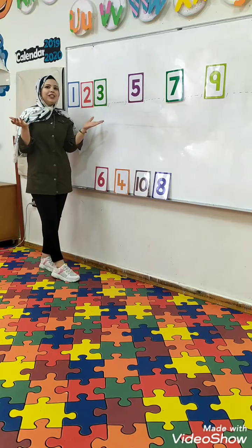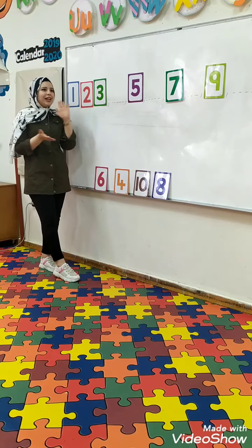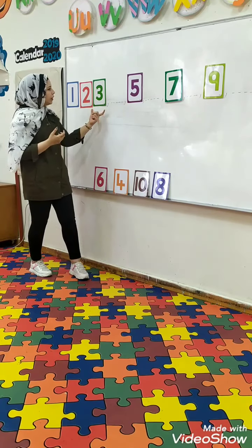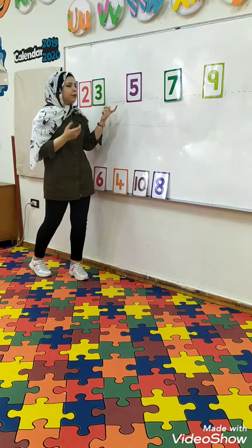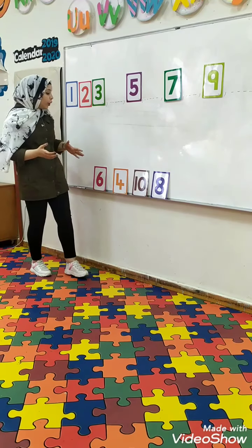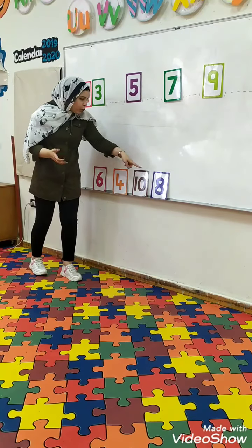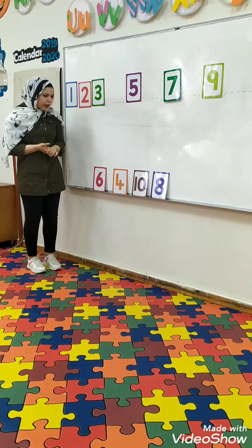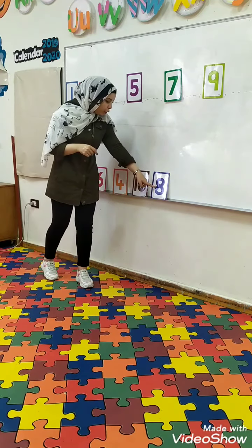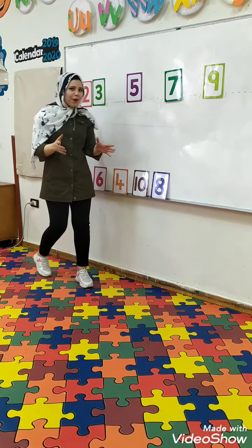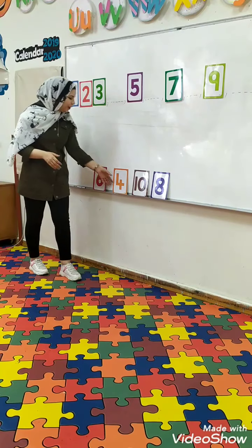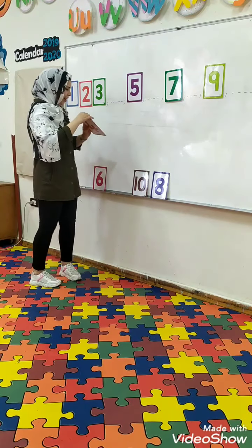Uh-oh, where is this number? It's missing. Who can tell me what comes after number 3? Super. 4. Which one is number 4? I know, I know. This is number 4. Which one is number 4? Super.